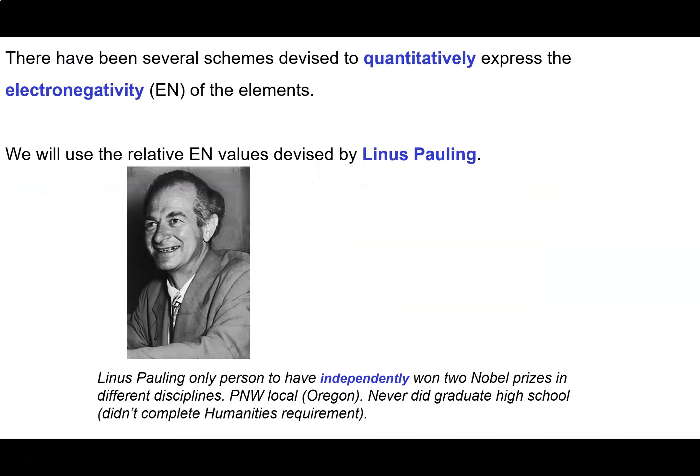So there are a whole bunch of scales that have been devised to quantitatively express the electronegativity of an element. Perhaps the most successful are the relative electronegativity values developed by Linus Pauling. Now Linus Pauling is an interesting guy. He's a Pacific Northwest local. He comes from Oregon.